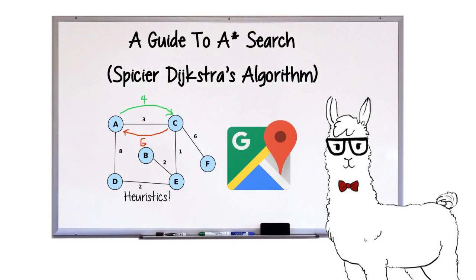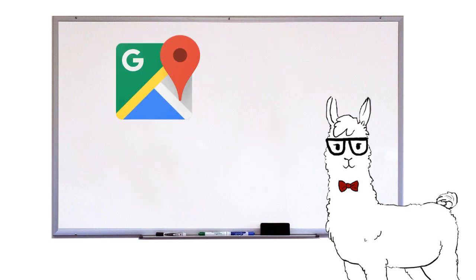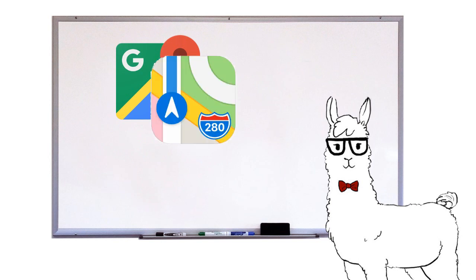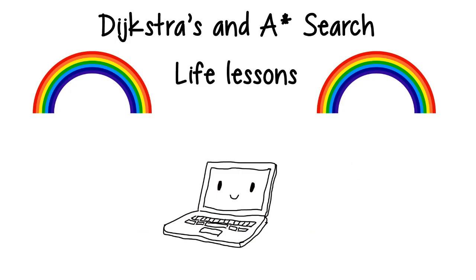So now you're pretty good at quickly going through graphs, you can go out there and build some really cool stuff like Google Maps, or at least like a jank version of it. But even beyond all this, I think learning Dijkstra's and A-Star come with some underrated life lessons as well.